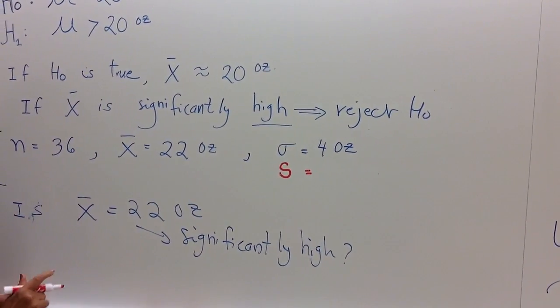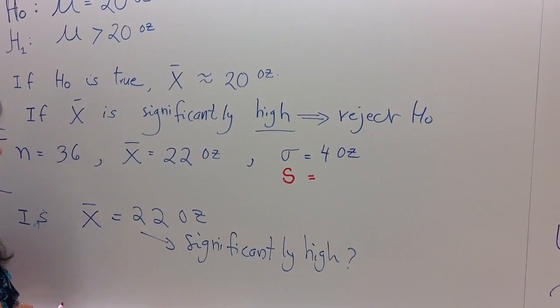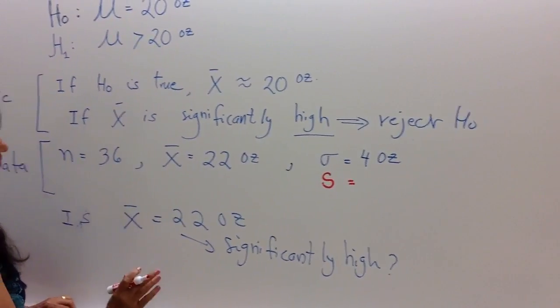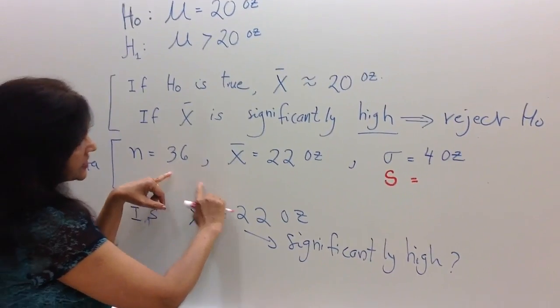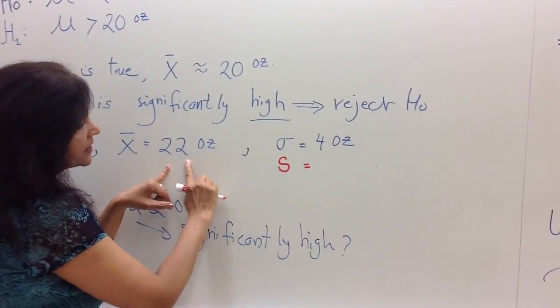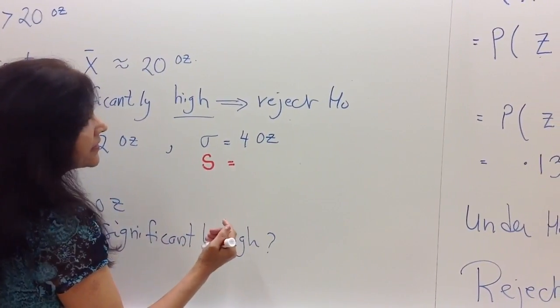And if that's the case, some of the steps will change. So let us suppose, for the sake of argument, that from 36 observations, when we calculated the mean, we also calculated the standard deviation,